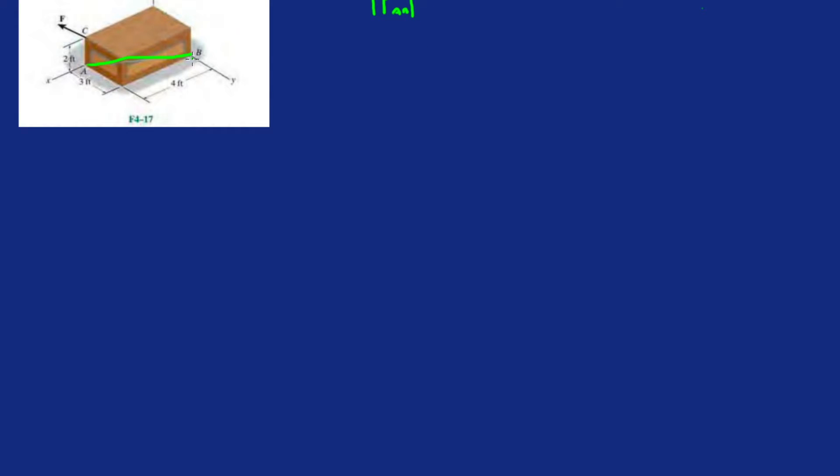Let's go from B to A. The distance from B to A is going to be 4i and then minus 3j.